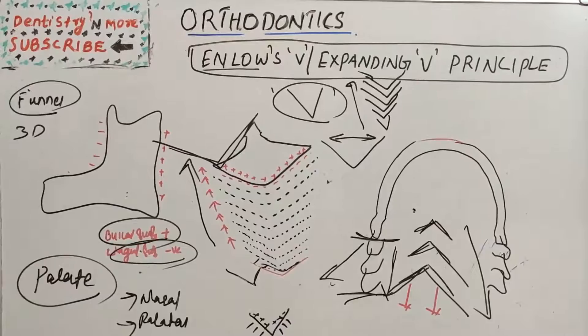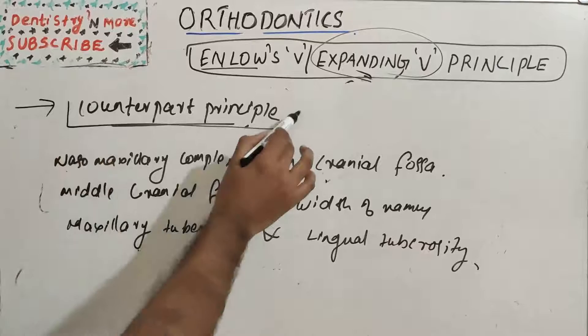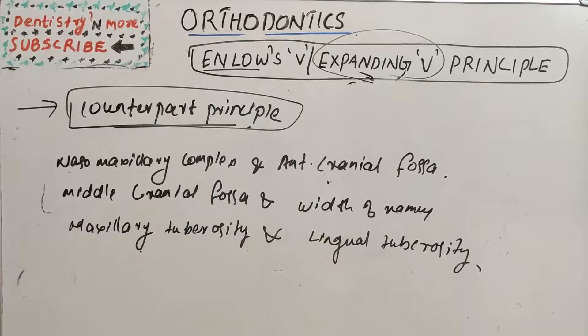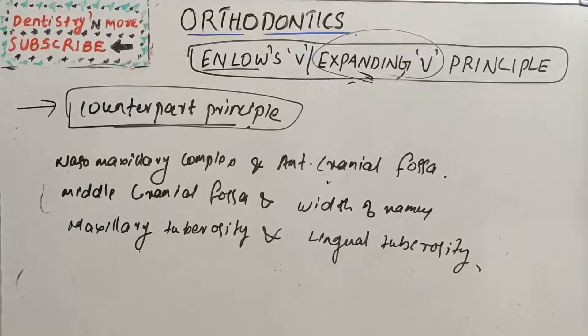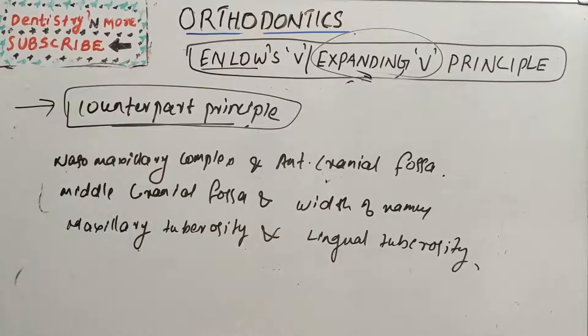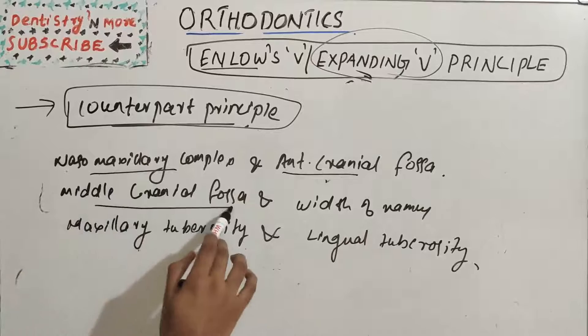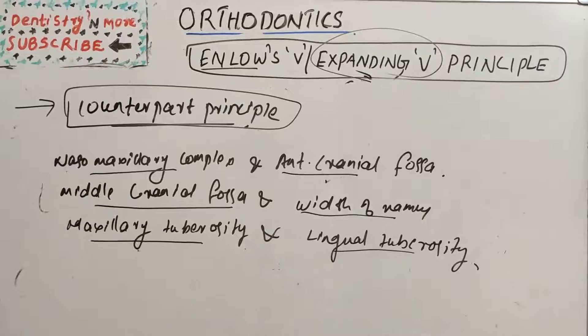That is all about Enlow's V principle. Enlow also put forward another principle along with his accepted V principle — that is the counterpart principle. The counterpart principle says that the growth of any given facial or cranial part relates specifically to other structural and geometric counterparts in relation to it. He says there will be a counterpart for most of the bones. There are many structures in the craniofacial skeleton which can be considered as counterparts, such as the naso-maxillary complex and anterior cranial fossa.